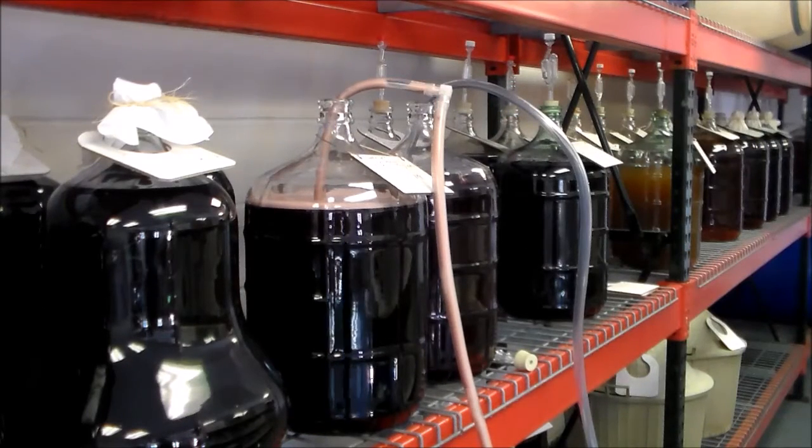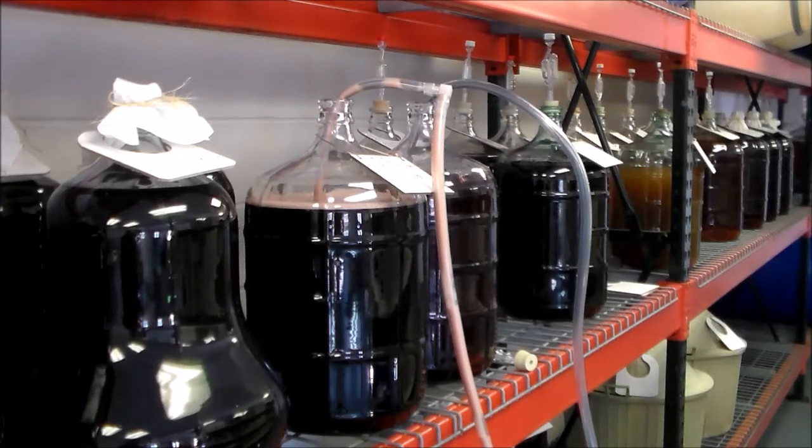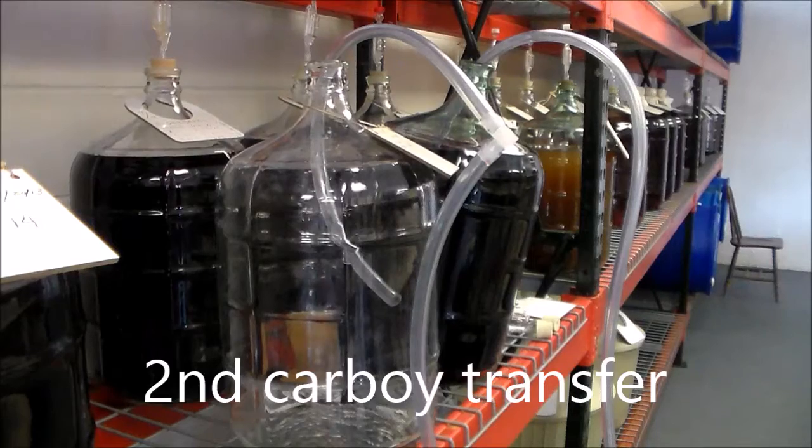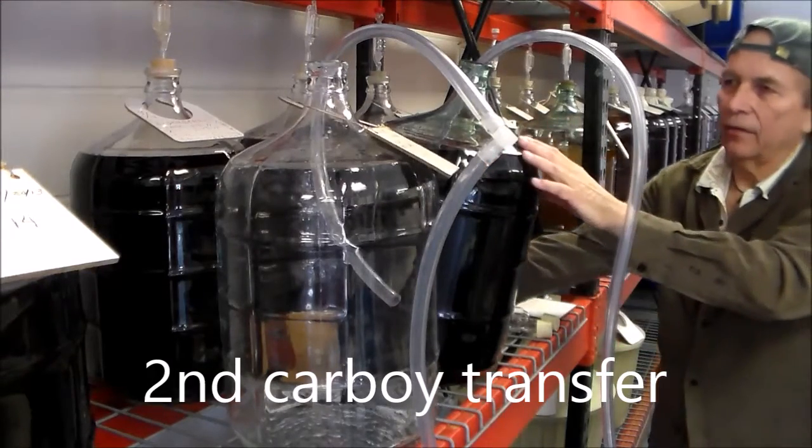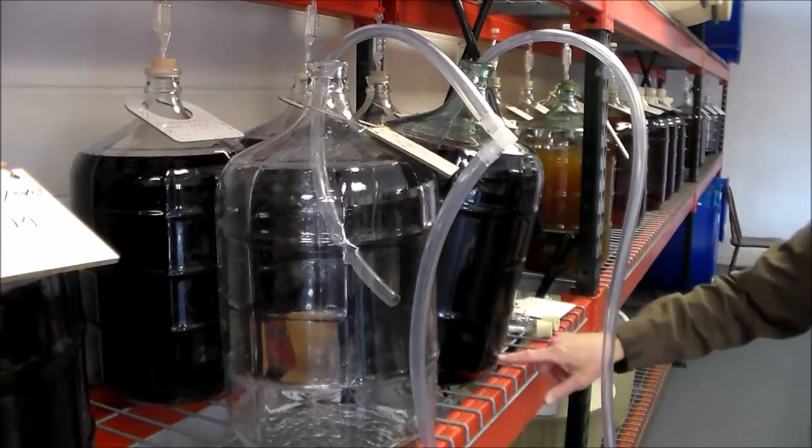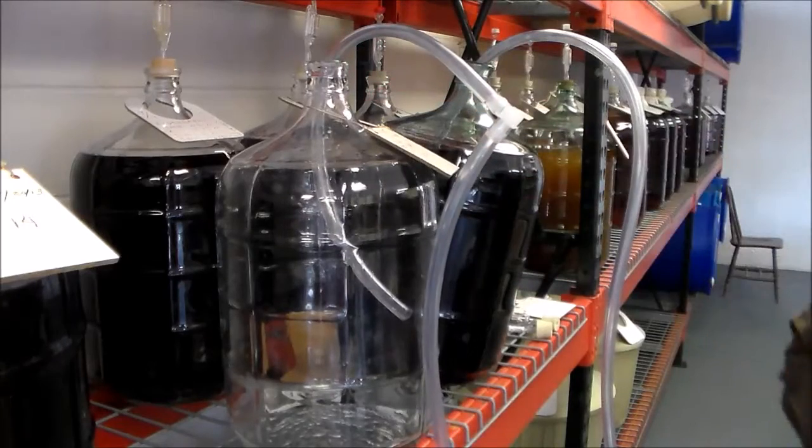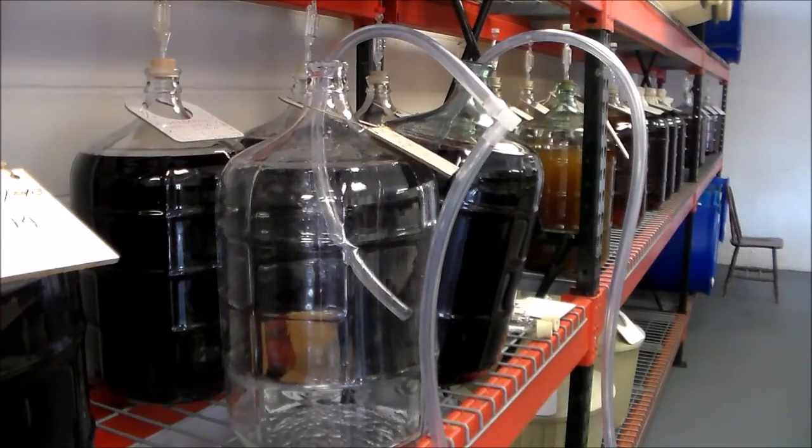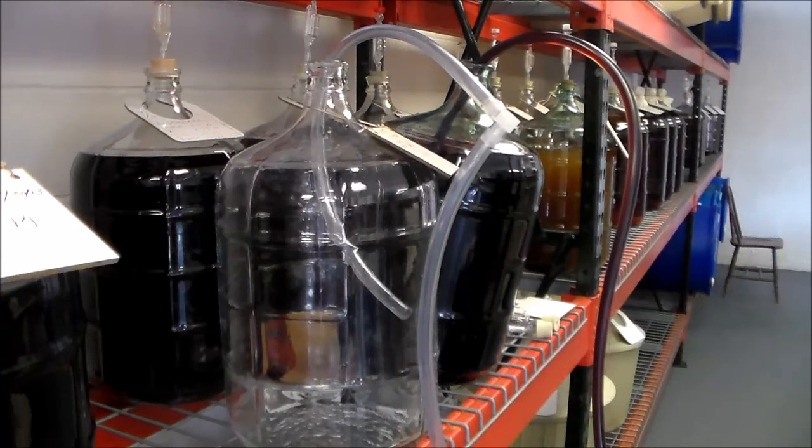Now before the wine gets bottled, that has to set for at least a day. Here's the two carboys. Here's the full one we're transferring from. I have a spacer, a block underneath, tilting it over. Have the hose down near the bottom. And here's the outflow. Let's turn the pump on. It's self-priming.